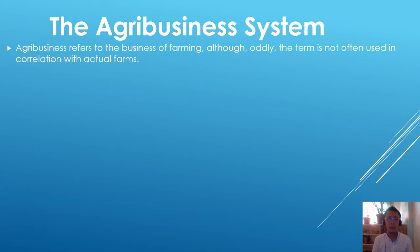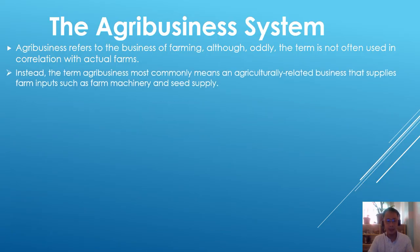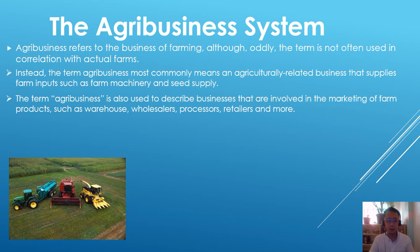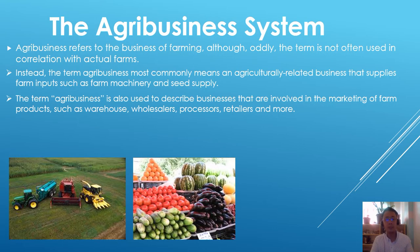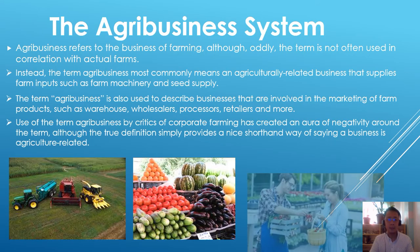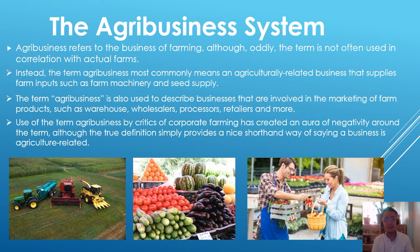The agribusiness system refers to the business of farming. Although the term is not often used in correlation with actual farms, agribusiness most commonly refers to an agriculturally related business that supplies farm inputs such as farm machinery. The term is also used to describe businesses involved in the marketing of farm products such as warehouses, wholesalers, processors, retailers, and more. Use of the term by critics of corporate farming has created an aura of negativity, although the true definition simply provides a shorthand way of saying a business is agriculture-related.